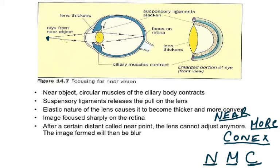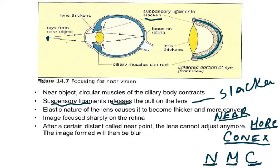For a near object, the circular muscles of the ciliary body contract, making it a smaller circle. The suspensory ligaments release their pull and slacken. The lens then becomes thicker and more convex, so the image is focused sharply on the retina. For a near object, we need a more convex lens because we need more refraction.